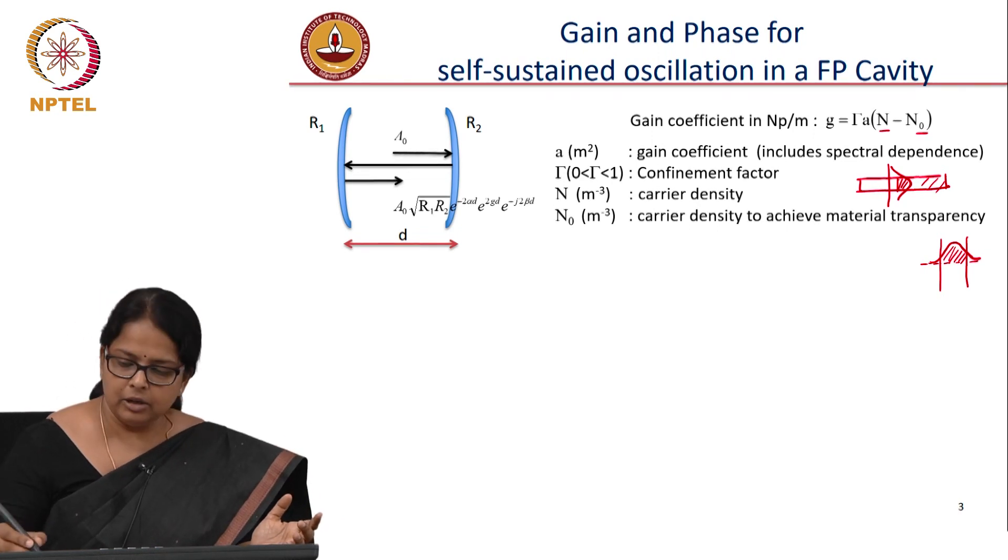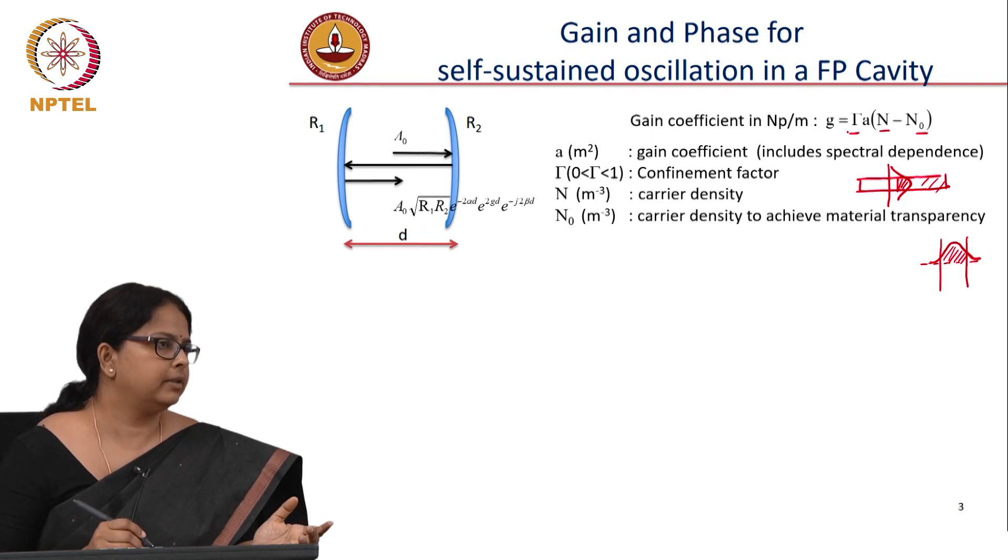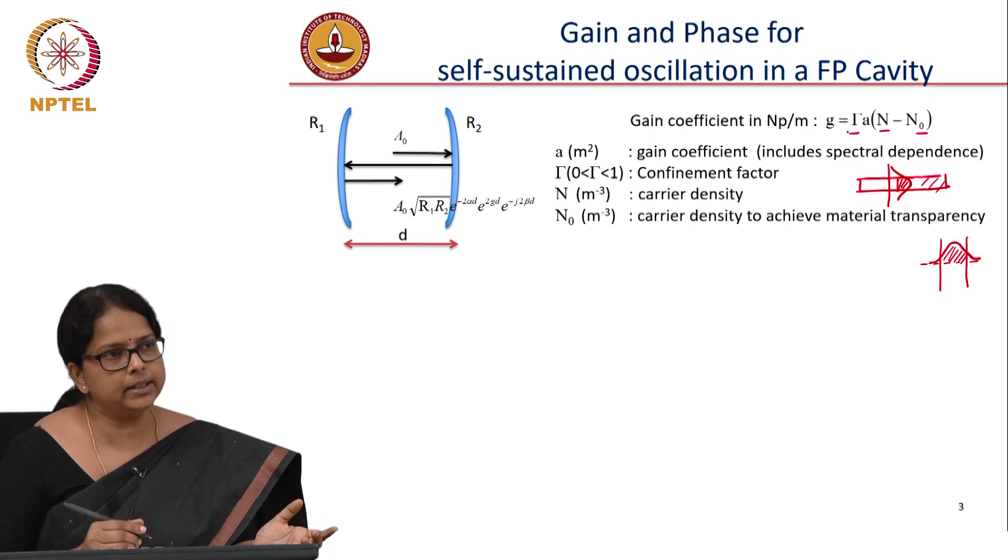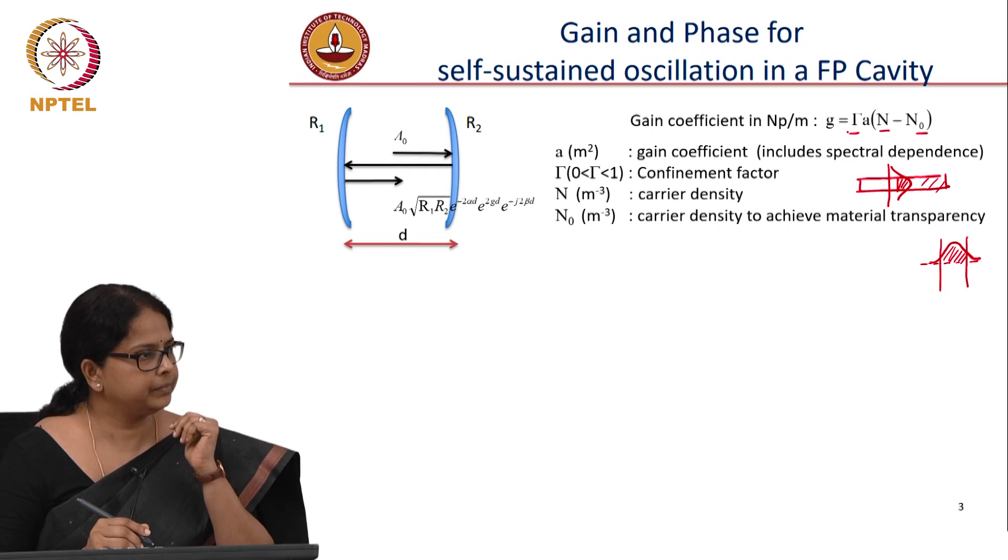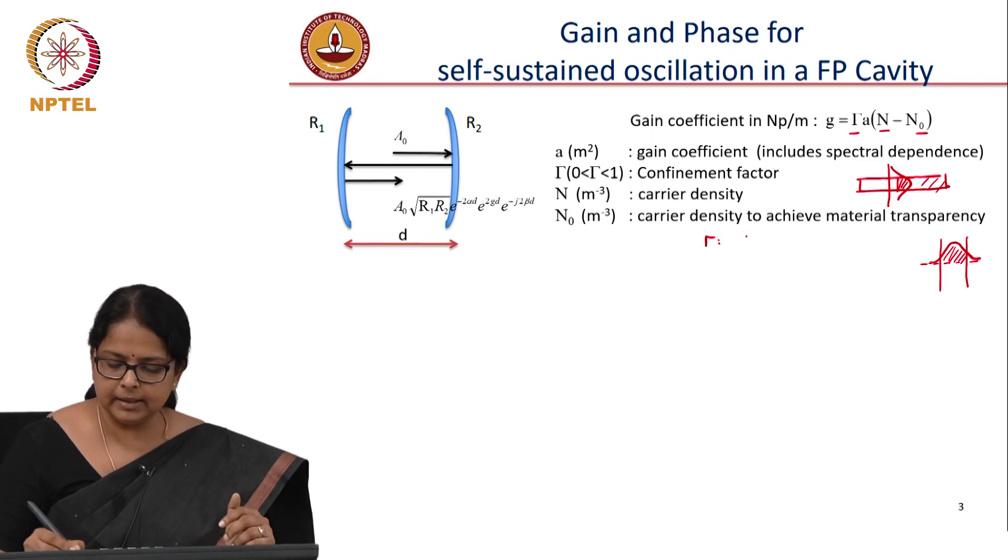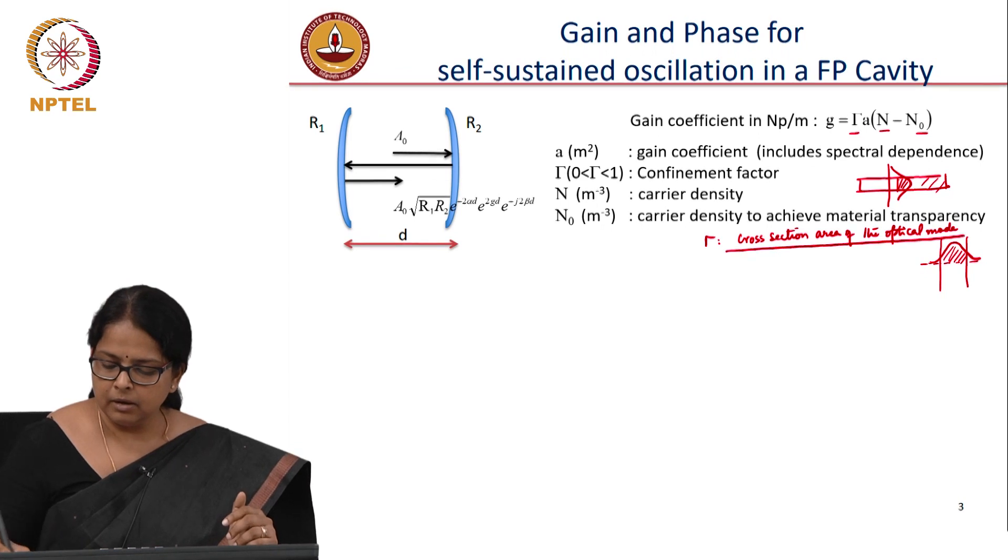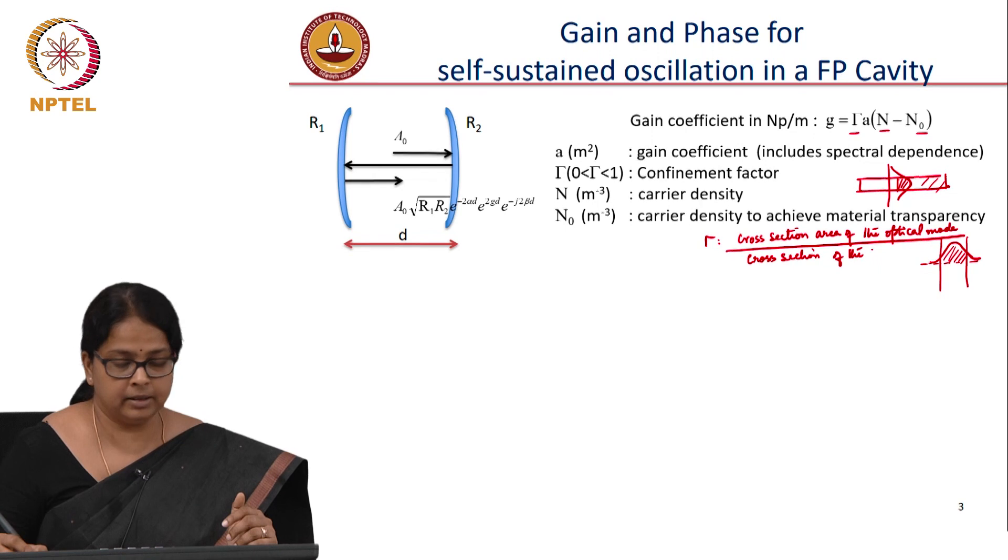And so to correct for that, you have this gamma which is a number which is less than 1. And how does one calculate gamma? You take the area of cross section of the mode divided by area of cross section of the junction region. So this gamma is nothing but cross sectional area of the optical mode divided by cross section of the junction in a double heterostructure device.